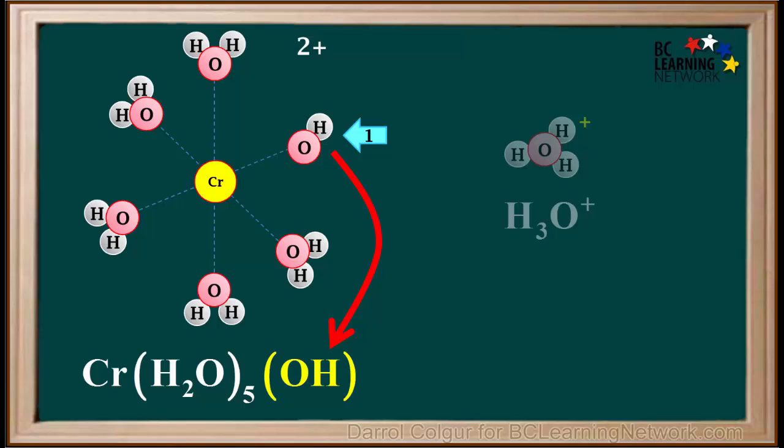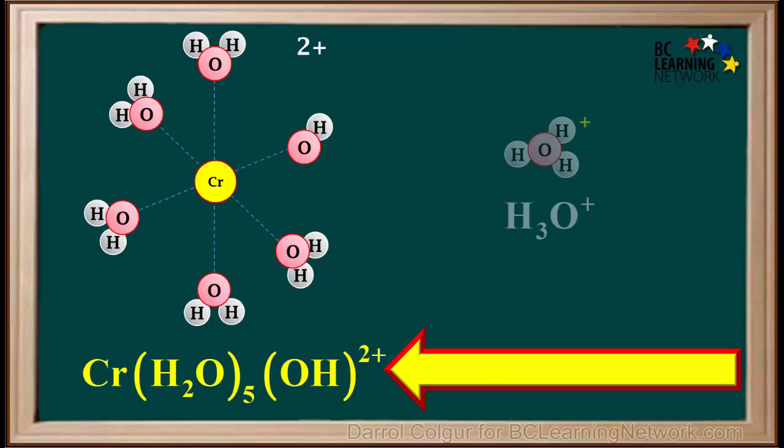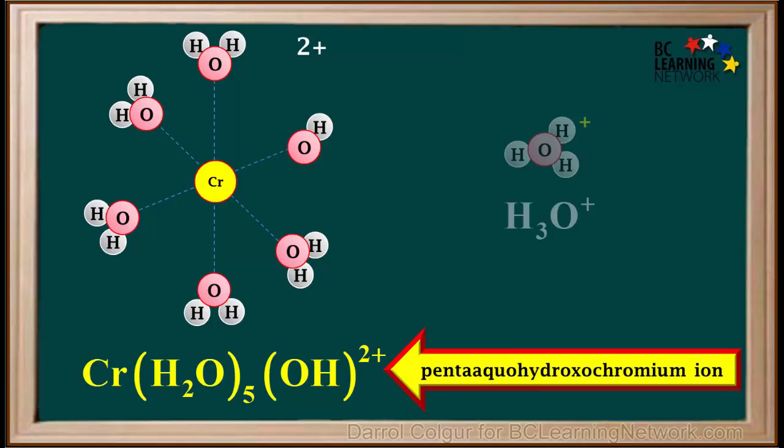Even though there is only one OH, the system for writing formulas for complex ions still requires brackets around the OH. Finally, the whole ion has a net charge of 2+. So we write 2+ here. So this is the final formula for the ion left when the hexaquochromium ion donates a proton to a water molecule. This is the conjugate base of the hexaquochromium ion. It is what remains when a hexaquochromium ion loses a proton. Because it has 5 waters and 1 OH group, it is called the penta-aquohydroxochromium ion. But don't worry, you won't be required to name this ion in CHEM12.